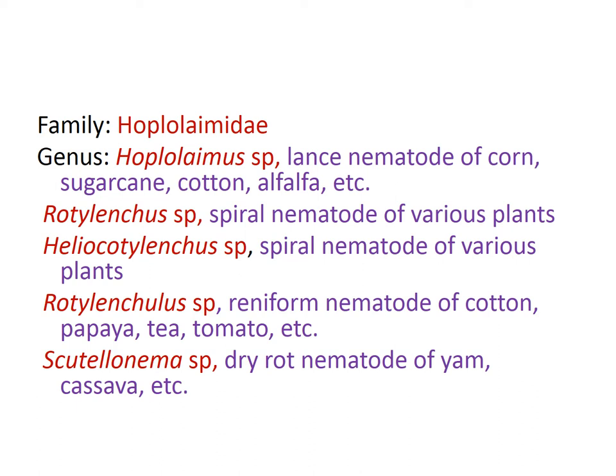Rotylenchulus reniformis is the reniform nematode of various crops including cotton, papaya, tea, tomato, and vegetables. It is a very common nematode in Kerala — Rotylenchulus reniformis is the kidney-shaped nematode. Then Scutellonema — Scutellonema is a nematode which infects yams, causing dry root rot of Amorphophallus and various others including Dioscorea and Colocasia.